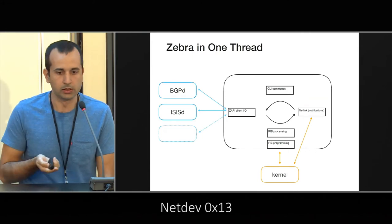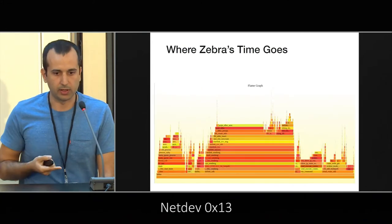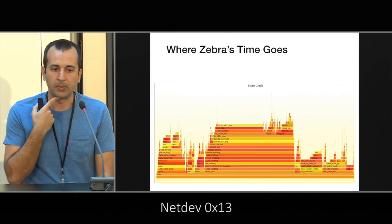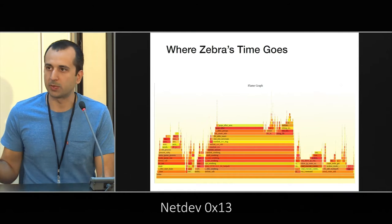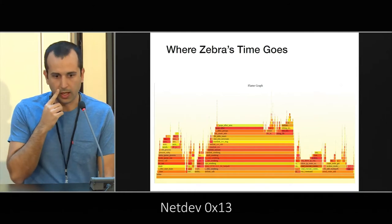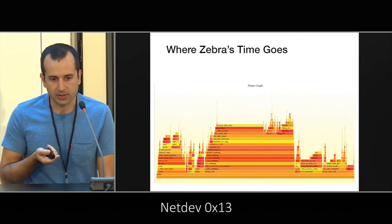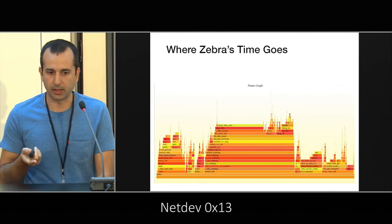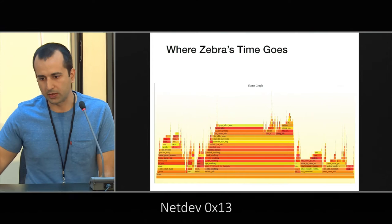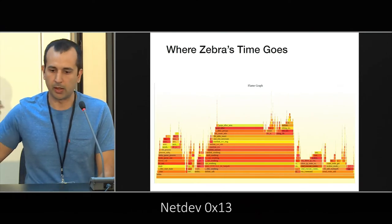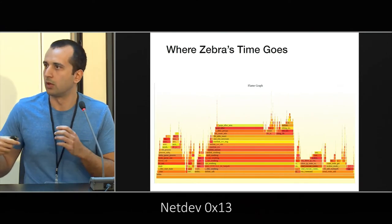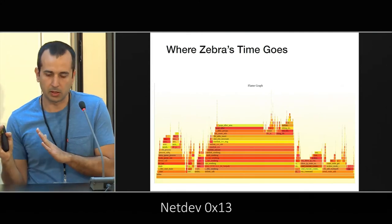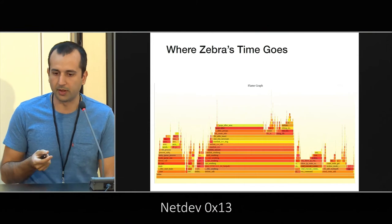This is actually a flame graph generated by Donald that shows pretty clearly where Zebra was spending its time. On the leftmost side you see the actual route processing part. On the rightmost side you see a ZAPI message handler — basically Zebra receiving a new route and updating its internal state. Slightly more to the left you have the CLI handling.